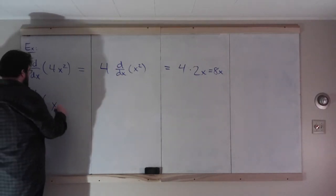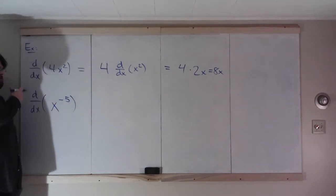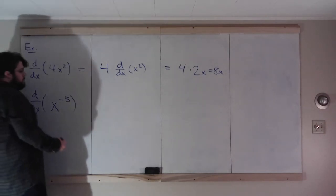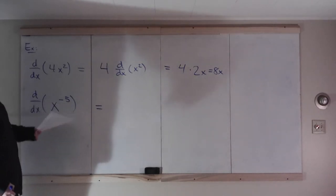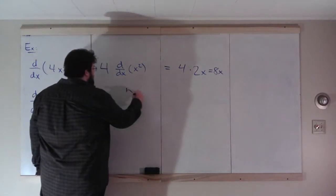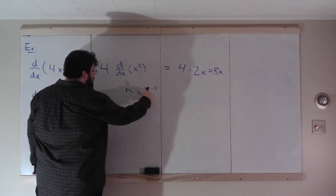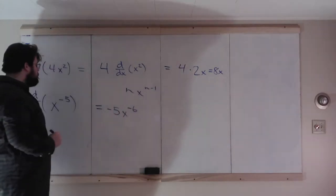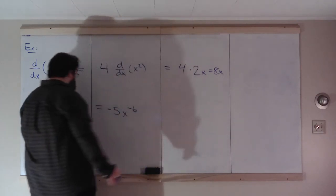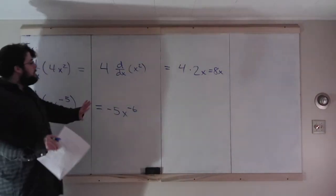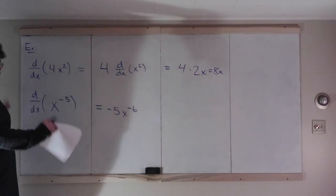What about the derivative of x to the negative 5? Negative 5 is still a number, so we can use the power rule with n equal to negative 5. We have nx to the n minus 1: negative 5 times x to the negative 5 minus 1, which is negative 6. So the derivative is negative 5x to the negative 6. You can leave negative exponents in your answers.